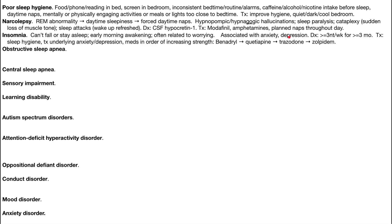Insomnia is next. These are patients that can't fall asleep or stay asleep and may have early morning awakenings. Insomnia is often associated with anxiety and depression. The technical definition for diagnosis is an inability to sleep or stay asleep for at least three nights a week, ongoing for at least three months. Treatment is similar to sleep hygiene — improve sleep habits and make sure there's no underlying anxiety or depression. Medications in order of increasing strength include Benadryl, quetiapine, trazodone, and zolpidem, which is the strongest.